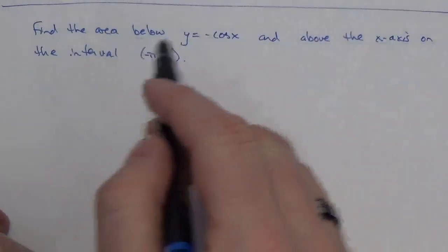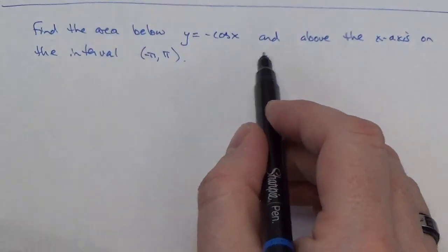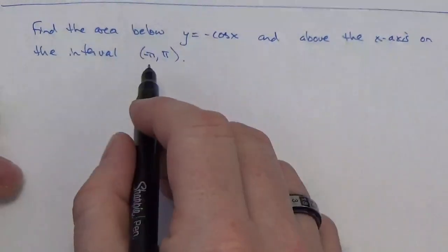Okay, so this question says, find the area below y equals negative cos x and above the x-axis on the interval negative pi to pi.